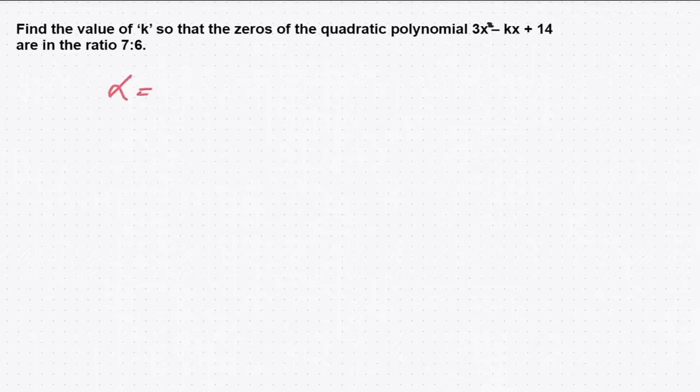That is alpha and beta. Alpha value is 7p, because it's a ratio, you have to attach one variable. Beta is 6p.